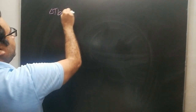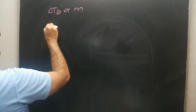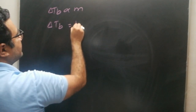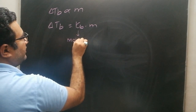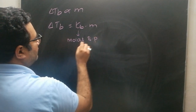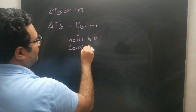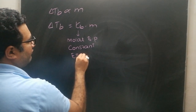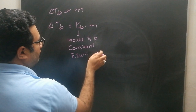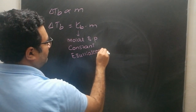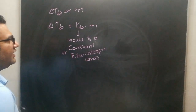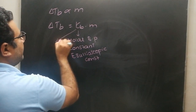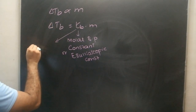Practically, the elevation of boiling point is directly proportional to the molality of the solution. When the sign of proportionality is replaced with equality, a constant is introduced. This constant is called the molar boiling point constant, or the ebullioscopic constant, Kb. The ebullioscopic constant depends only on the nature of the solvent.